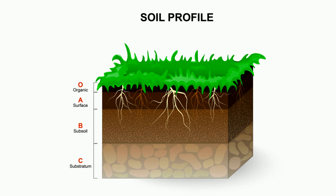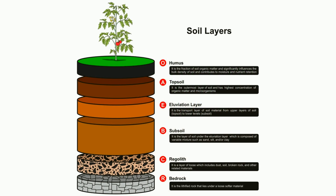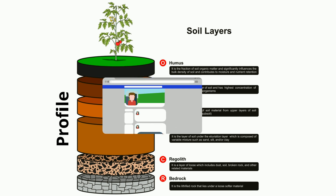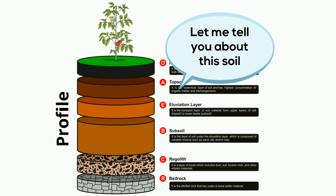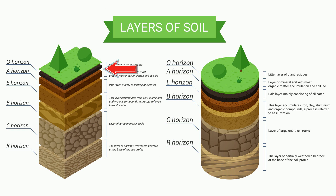A vertical layer of soil that shows all of the different layers is the soil profile. Much like your profile on Facebook, it tells others all about you. The profile of the soil tells all about the soil. A soil horizon is each individual layer of the profile. Each layer has different physical properties.